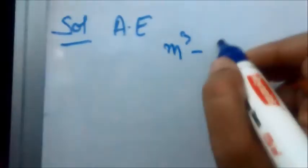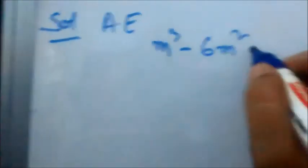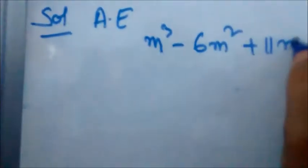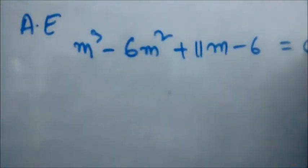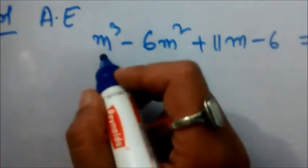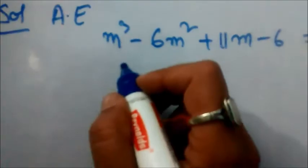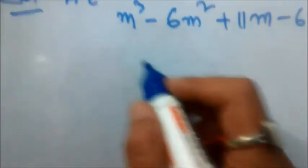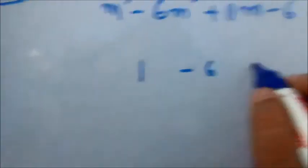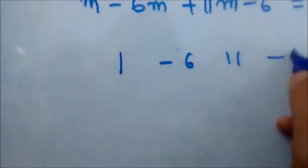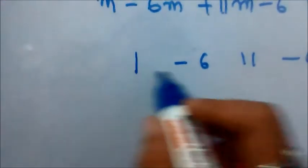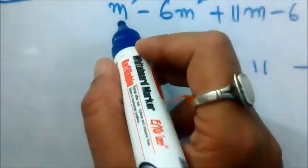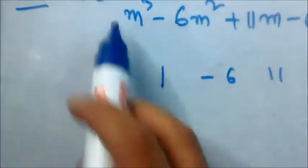The auxiliary equation is: m³ - 6m² + 11m - 6 = 0. For finding the roots, we will use the synthetic division method. The coefficients are: 1, -6, 11, -6 — corresponding to m³, m², m, and the constant.